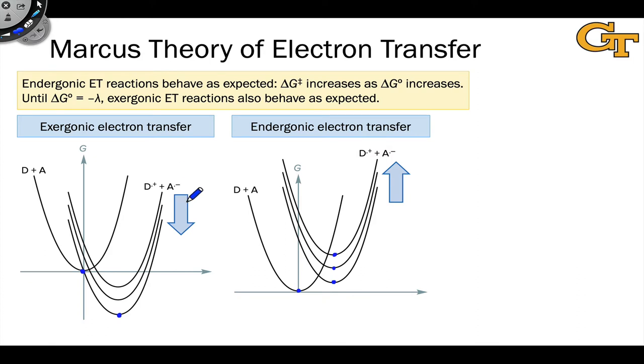Endergonic energy transfer reactions behave as expected with respect to their activation energy. The activation energy of the reaction increases as delta G increases. As the reaction gets less favorable thermodynamically, the activation energy goes up. Let's highlight the activation energies on this graph. We can see the path followed by the representative point, up along the reactant surface and then down along the product surface, and we have to surmount a higher barrier for a more endergonic reaction. That's what we would expect.